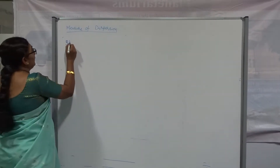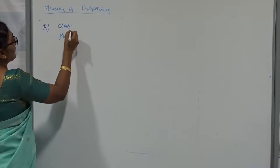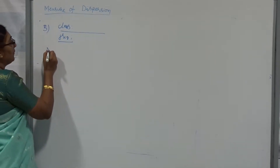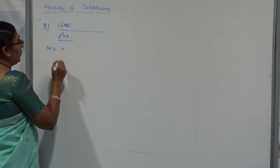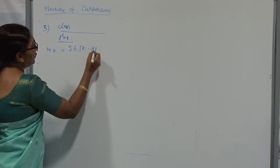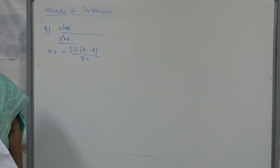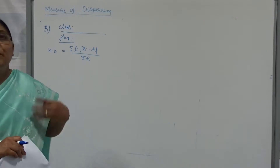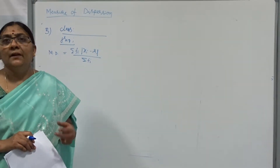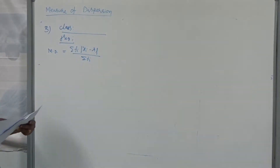This is the last case, the third one. Suppose given data is in the form of classes, having a class and having a frequency. In such cases, how do we find the mean deviation? Here also, we use the same formula. What is the formula for mean deviation? The same formula — for about the mean, about the median — sigma of the absolute of xi minus c divided by total frequency. The only thing is you have to take the midpoint value of the classes.